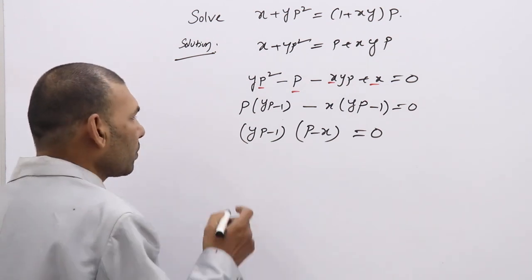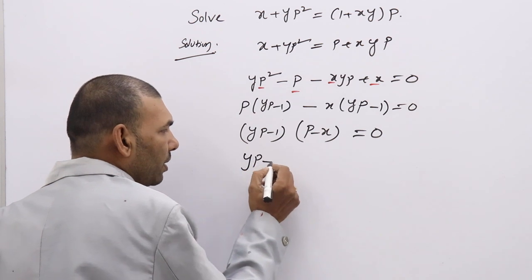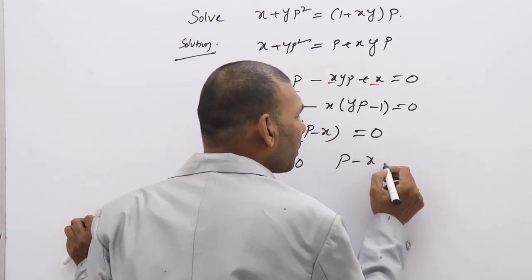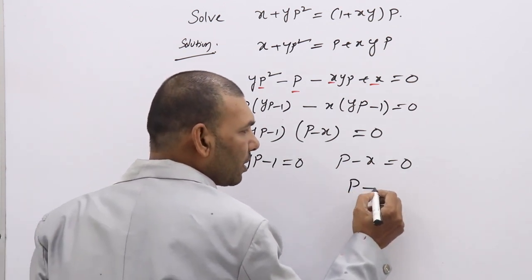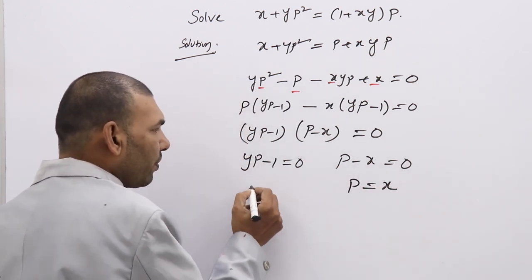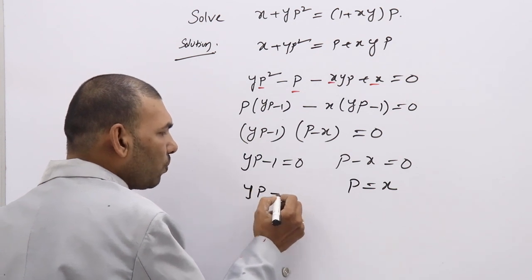yp minus 1 into p minus x equal to 0. Now equate the two to 0 separately. yp minus 1 equal to 0, p minus x equal to 0. So here you will get p equal to x. Here you will get yp equal to 1.